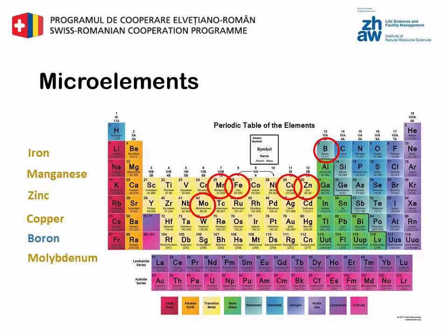Manganese has an important role in redox reactions and is a major regulator of enzymatic action. It has a role in photosynthesis and in the final stage of the nitrate reduction.